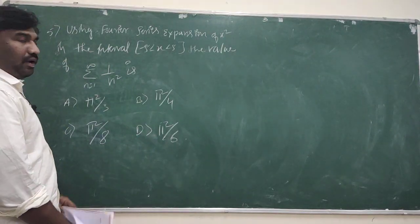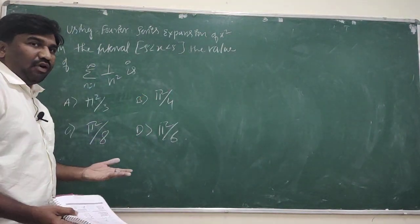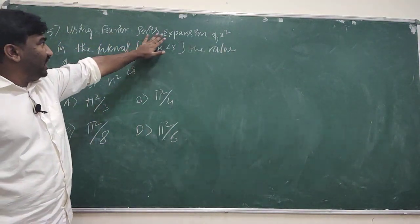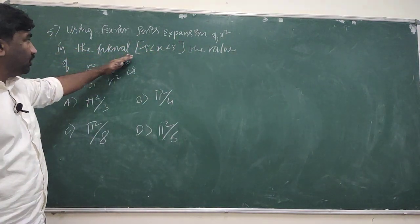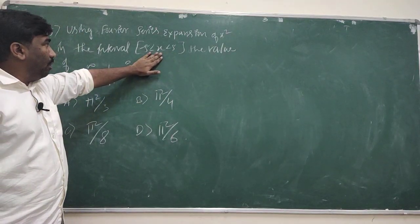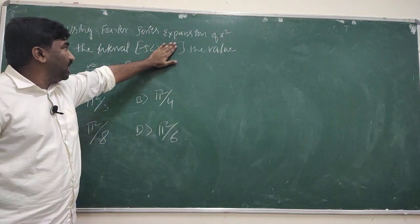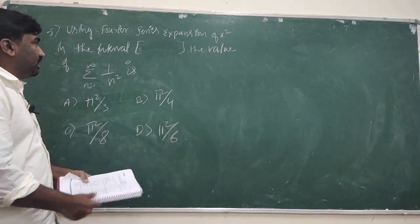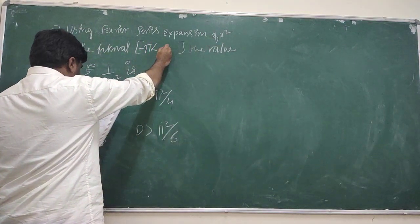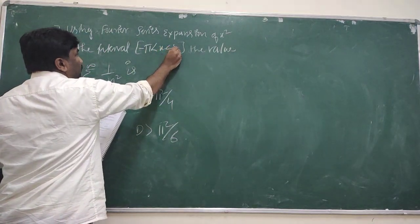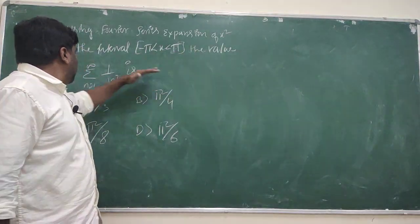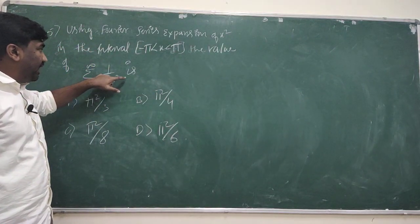In the next video, I will upload question number 4. Now, question number 5: using the Fourier series expansion of x² in the interval −π to π, find the value of the summation from n=1 to infinity of 1/n².